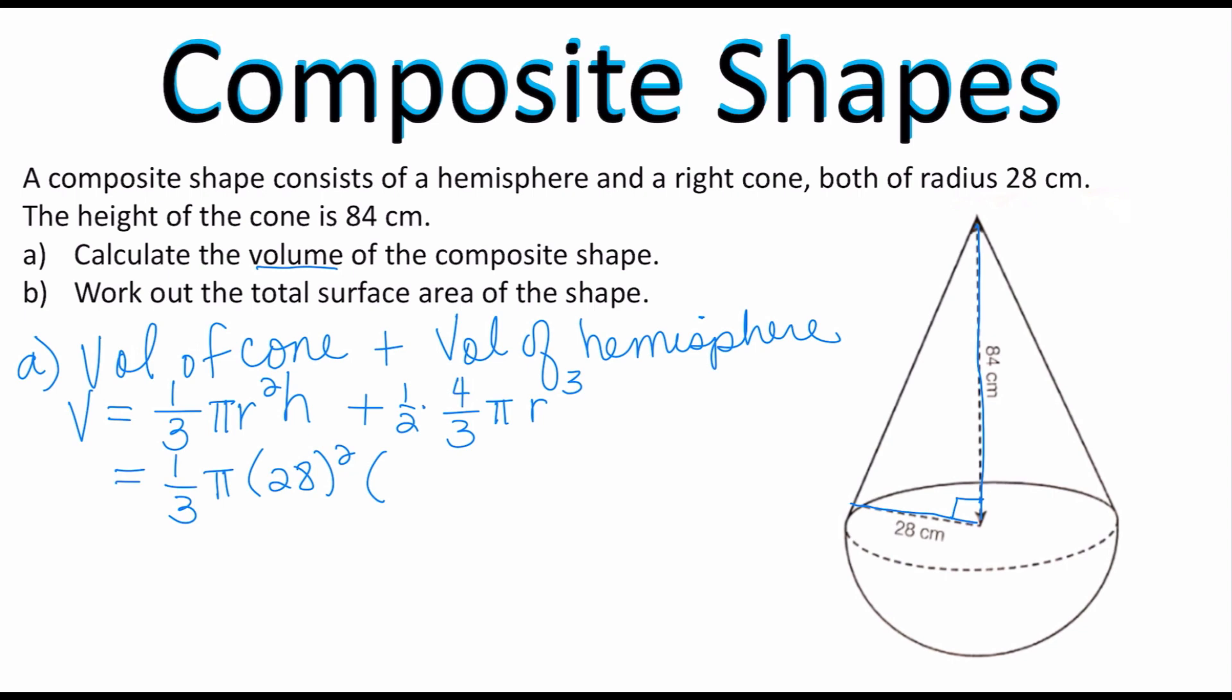So that is going to be 84 plus (4/6) or (2/3) when you simplify this, times π and again the radius is 28 cubed.